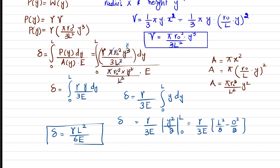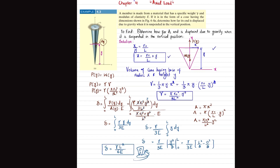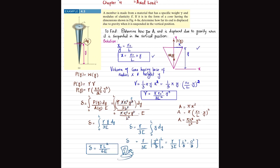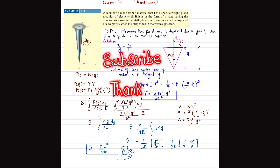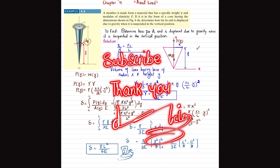So the final answer is δ = γL²/(6E), which is the vertical displacement of the end of this cone when it is suspended from the fixed end. That concludes example 4.3. If you have any questions, ask in the comments. Thank you for watching.